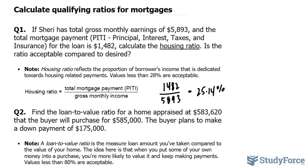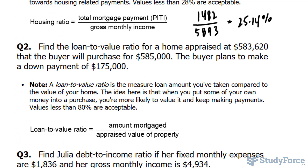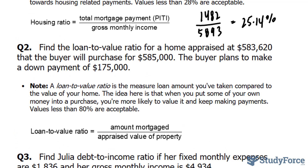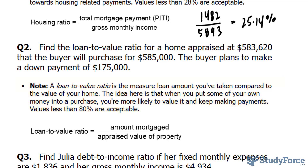In question number two, we are expected to calculate the loan to value ratio. The loan to value ratio is the measure of the loan amount you've taken compared to the value of your home. The idea is that when you put some of your own money into a purchase, you're more likely to value it and keep making payments. Values less than 80% are usually acceptable.